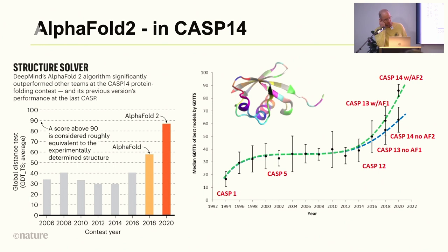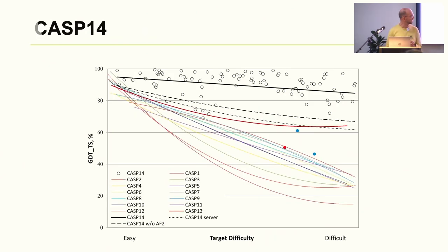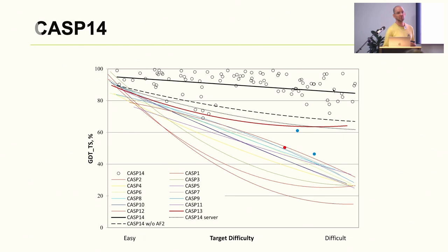Then in CASP14, we saw a dramatic jump. For hard targets, GDTTS went from ~40 in CASP12, to ~60 in CASP13, to close to 90 with AlphaFold2. Methods not using AlphaFold2 were basically catching up to AlphaFold1 from years before. CASP14 showed AlphaFold2 was almost flat across all target difficulties, achieving nearly 90 across the board — almost as good as experimental methods. It was extremely impressive.